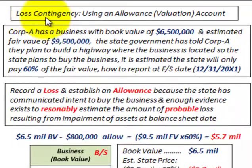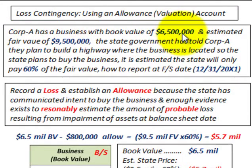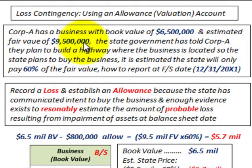What we're going to be going over here is a loss contingency using an allowance or a valuation account. For example, Corporation A has a business with a book value of $6.5 million and its estimated fair value is $9.5 million.